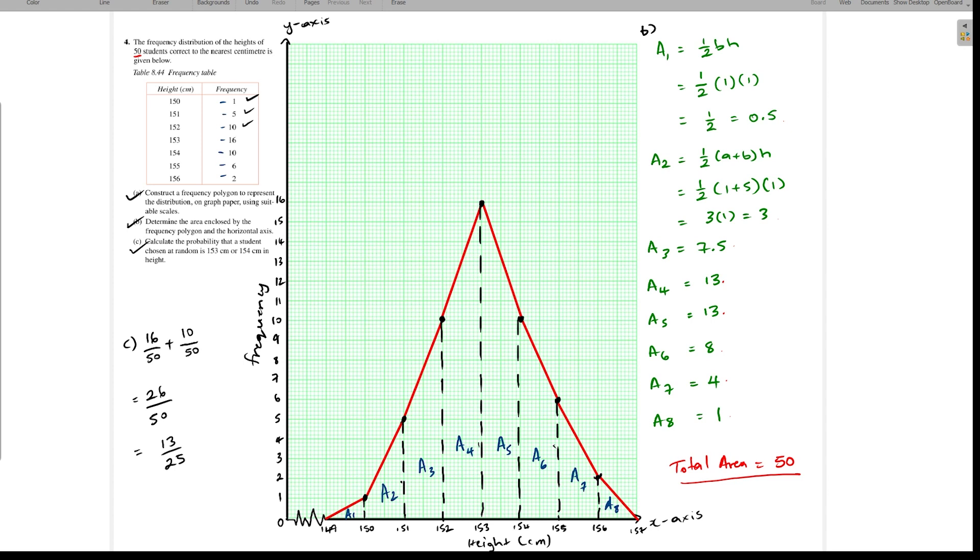That would be part C to this question. And that is how you go ahead and construct your frequency polygon, calculate the area enclosed by the frequency polygon and the x-axis, and calculate any question that relates to the frequency polygon. I hope this video taught you something about frequency polygons and how to do it when we have ungrouped data. Thank you for watching. See you in the next one.